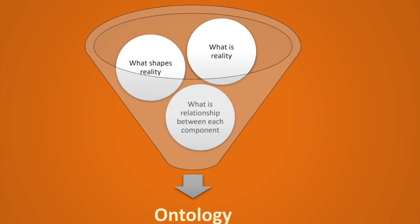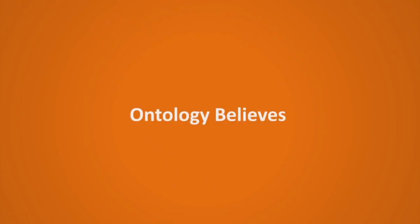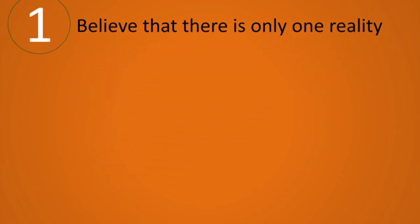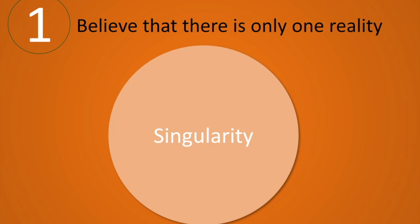Ontology gives us three basic questions: what is reality or knowledge, what shapes that knowledge or what events shape that reality, and what is the relationship between each of these components which shapes the reality or forms the knowledge. Simply put, ontology tells us about what is reality. The first belief of ontology is singularity — there is only one reality, one universal truth, one universal set of solutions to any problem, and this reality exists independently of how people perceive it.